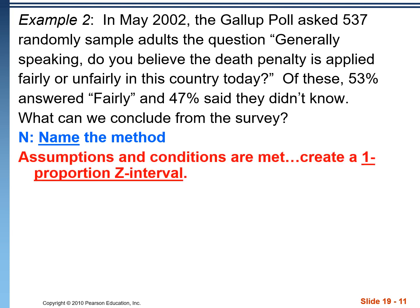The N in PANIC is for Name the method. There are a number of different confidence intervals we'll be learning, each with their own name. This one is called the one-proportion Z interval — it's a proportion problem, the 'one' indicates one sample, and the 'Z' indicates we're using a Z score to create the interval. I is for write the Interval. Normally we'll let our calculator do the work.